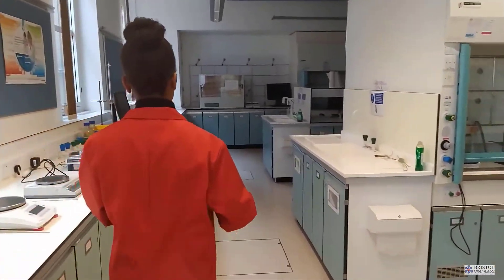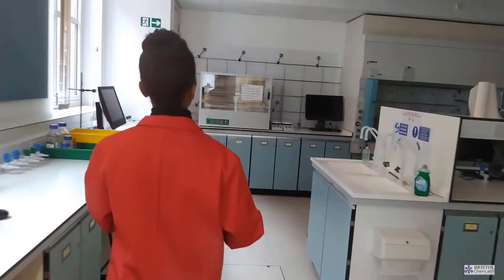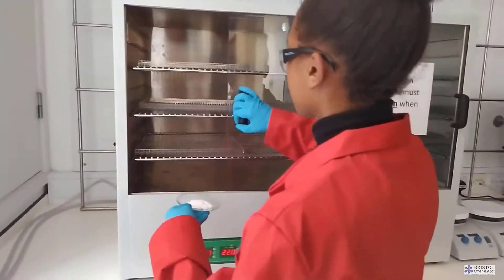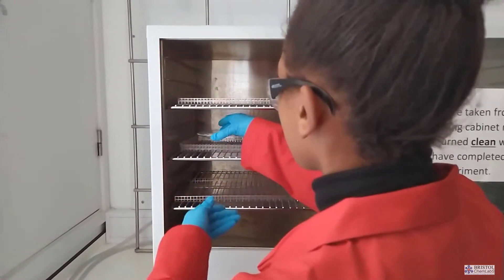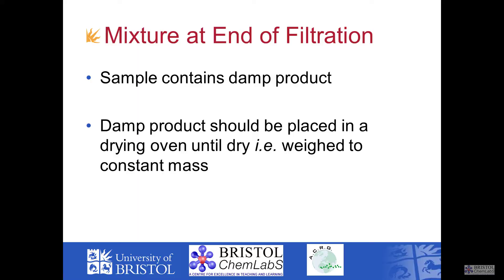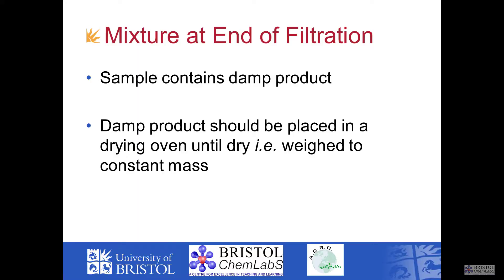Of course if you wanted to ensure it was dry you'd weigh this damp sample beforehand, put it into the drying cabinet and weigh it periodically until the mass no longer decreases. We dry to constant mass. The next step is some analysis of our product.